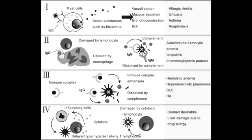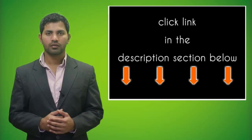Additional facts about type 4 hypersensitivity: this is a delayed response and it does not involve antibodies. All the other hypersensitivity reactions — type 1, type 2, and type 3 — are all antibody-mediated.